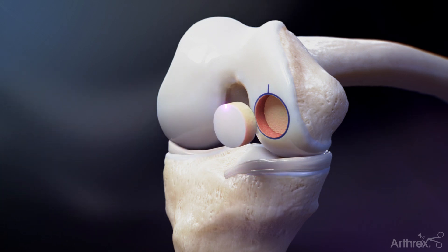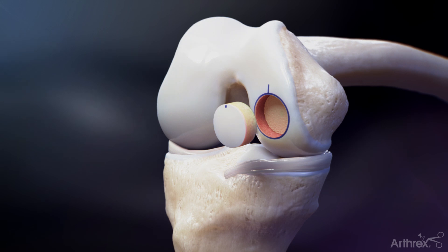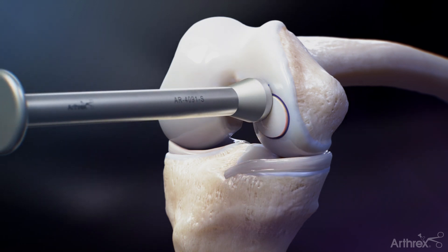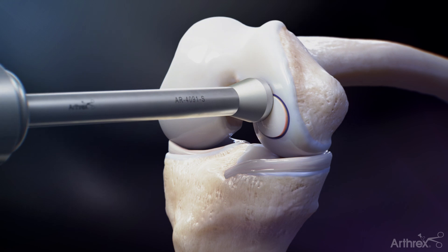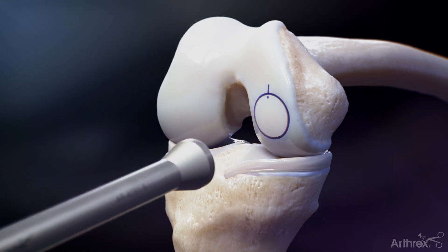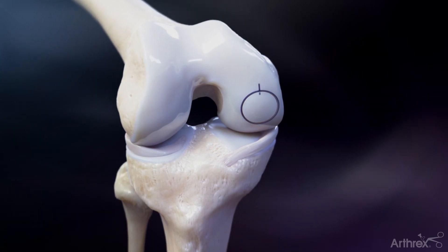Match the graft reference mark with the recipient reference mark for orientation. Advance the graft with firm pressure into the socket. A tamp may be used as needed to achieve complete insertion. Advance the graft until flush with the surrounding cartilage.